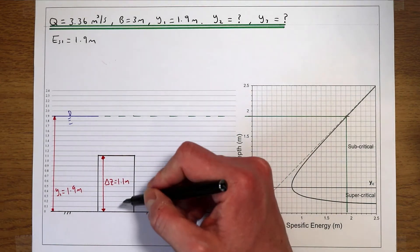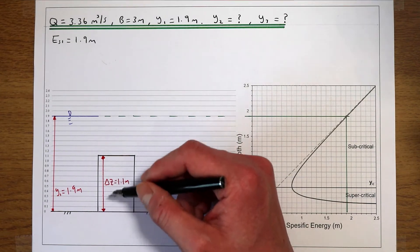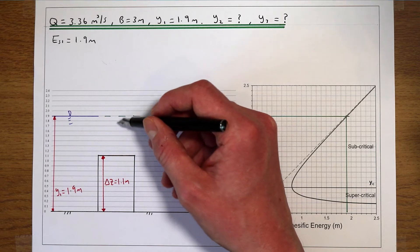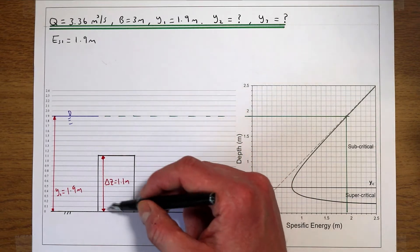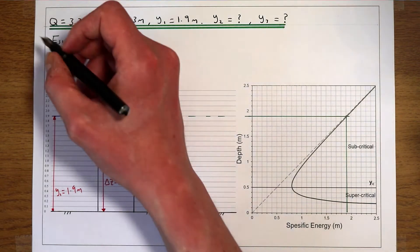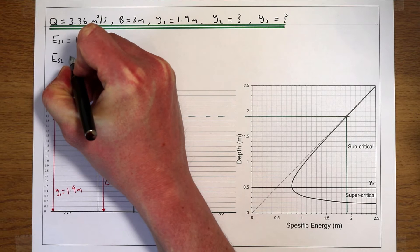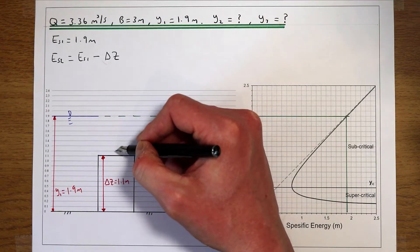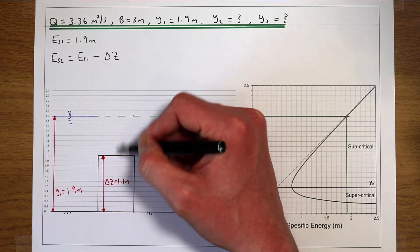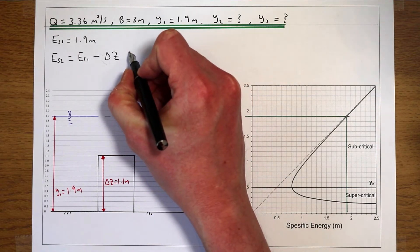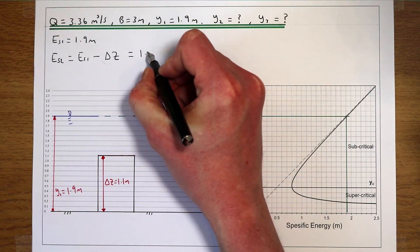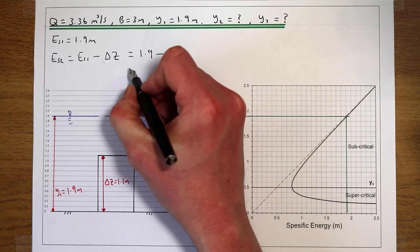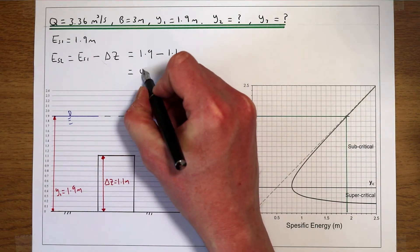Like we said in the previous video, this obstruction is going to take energy out of the flow. The total energy between point 1 and point 2 remains the same, but the actual energy in the flow is reduced at point 2, because we're losing energy to the potential energy of this blockage — converting flow depth and kinetic energy into potential energy. So our specific energy at 2 is going to be our specific energy at 1 minus that delta z of 1.1 metres, which gives us an energy at point 2 of 0.8 metres.